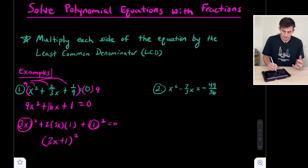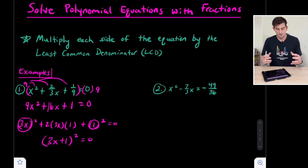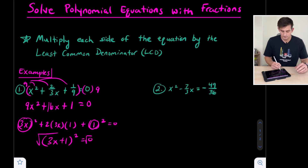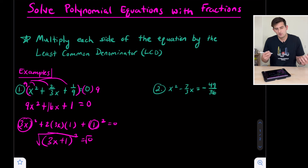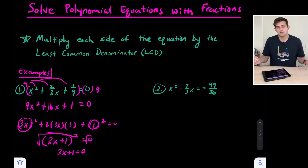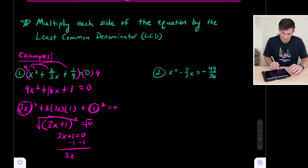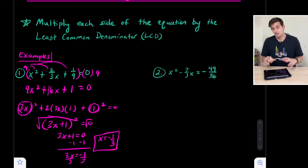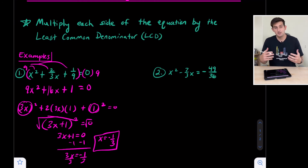Remember, this is equal to zero, and we're trying to figure out what x equals. Since we have the square of a binomial, we take the square root of both sides to eliminate the exponent — square root of zero is still zero. So now we have three x plus one equals zero. Subtracting one from both sides gives three x equals negative one, and dividing both sides by three gives x equals negative one third. That's the answer for number one — it's called a repeated root since it factored as the square of a binomial.